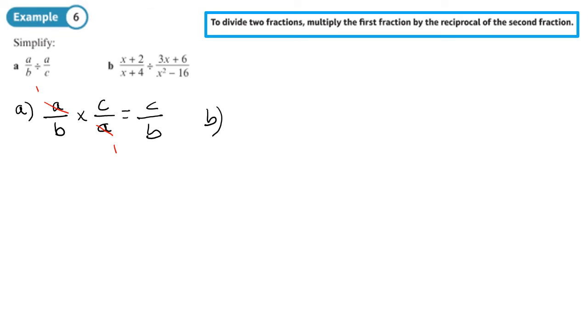Part B. X plus 2 over X plus 4. So this is going to be times by the reciprocal of this fraction. Now, we want to factorize that fraction so we can see if we can cross-cancel. You're not going to see it if you don't factorize. So the difference of two squares at the bottom and at the top, I can get X plus 2.